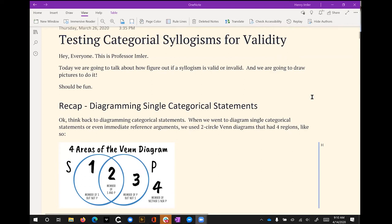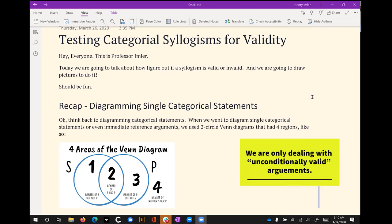What we really want to do is figure out how to take a syllogism and figure out if it's valid or not. Something I want to highlight here at the beginning is in this introduction class, we're only dealing with things that are unconditionally valid. There are lots of times when things could be valid only under certain conditions, but we're not going to get into that. If you hear about conditional validity, that would just be something for a more advanced logic class.